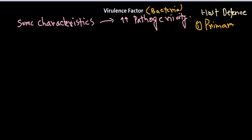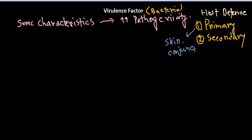In host defense mechanisms we have two types of defense lining. One is the primary defense lining and the other is the secondary defense lining. In the primary defense lining we have skin, conjunctiva, and similar barriers. In the secondary defense, the immune system takes action — immune cells fighting. The primary defense blocks approximately 70 to 80 percent of microorganisms, and the rest that manage to enter will be handled by the secondary defense.